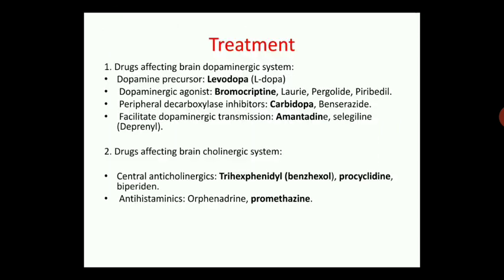Now, how exactly can we treat Parkinson's disease? There are two specific categories used in treatment: first, drugs affecting the brain dopaminergic system, and second, drugs affecting the brain cholinergic system. The drugs affecting the dopaminergic system aim to restore the dopamine level.